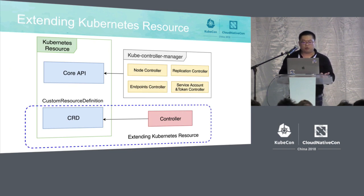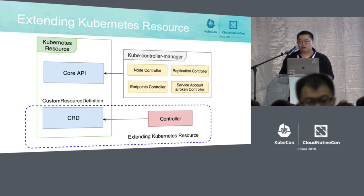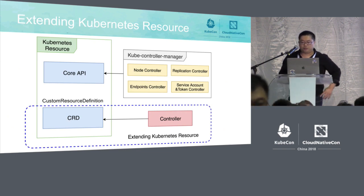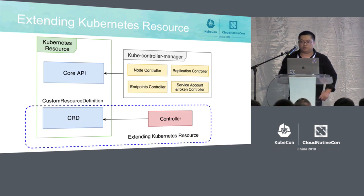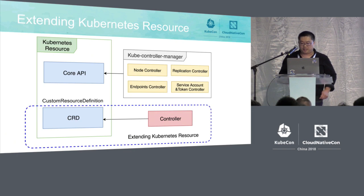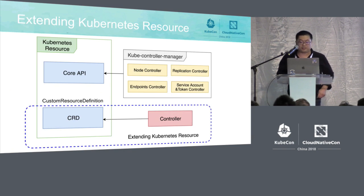Besides the core API, a very valuable feature of Kubernetes is it allows users to develop their own business logic and expose it as a RESTful endpoint, which can be managed by Kubernetes without modifying existing code. This is the so-called extending Kubernetes resource, or extending Kubernetes API. Custom Resource Definition, also known as CRD, is a mechanism provided by Kubernetes for this purpose.